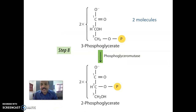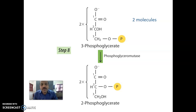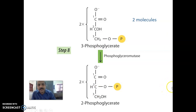Step 8: 3-phosphoglycerate is converted into 2-phosphoglycerate by the enzyme phosphoglyceromutase. Here, 2 molecules of 3-phosphoglyceric acid are converted into 2 molecules of 2-phosphoglyceric acid by phosphoglyceromutase.